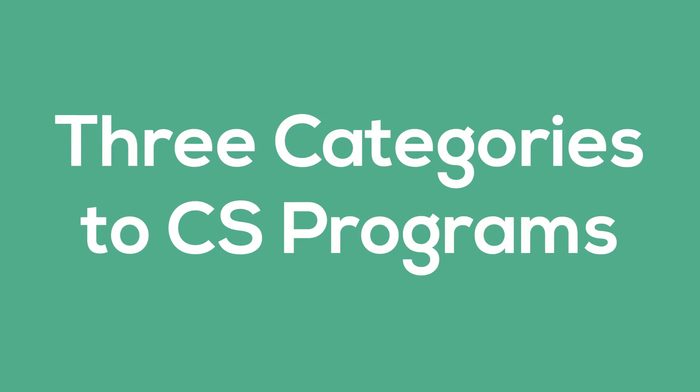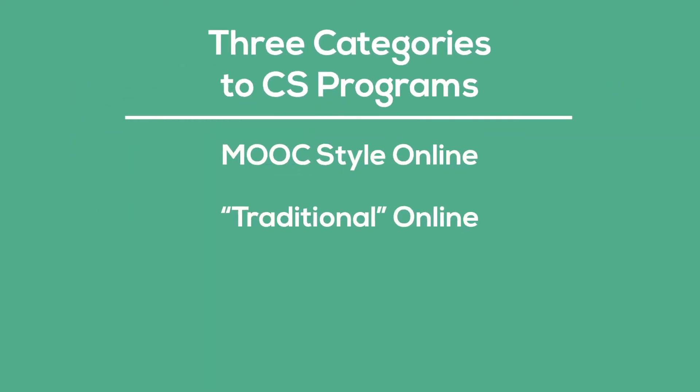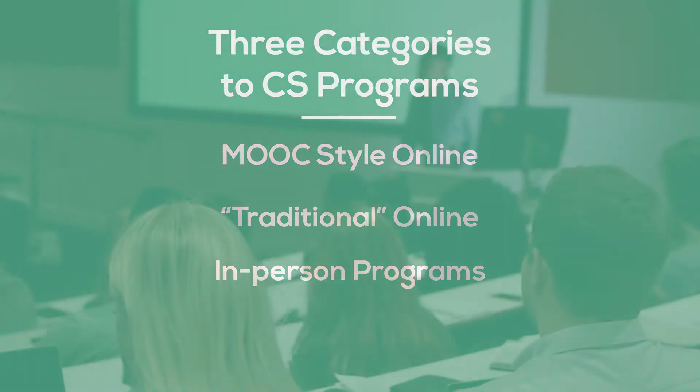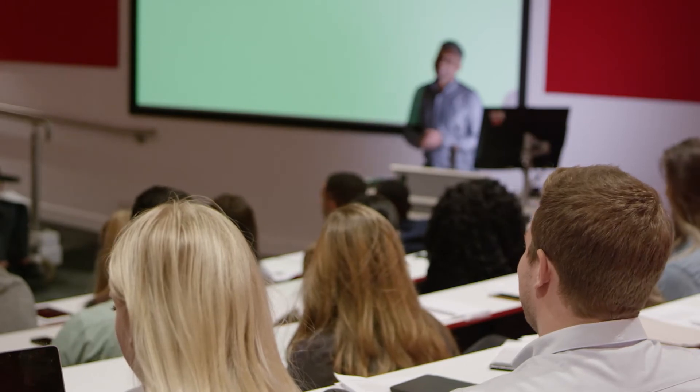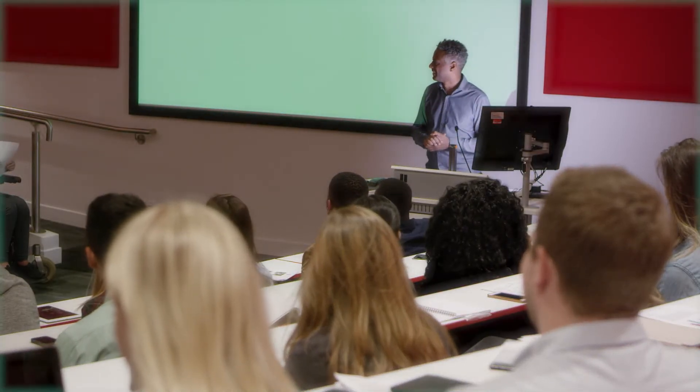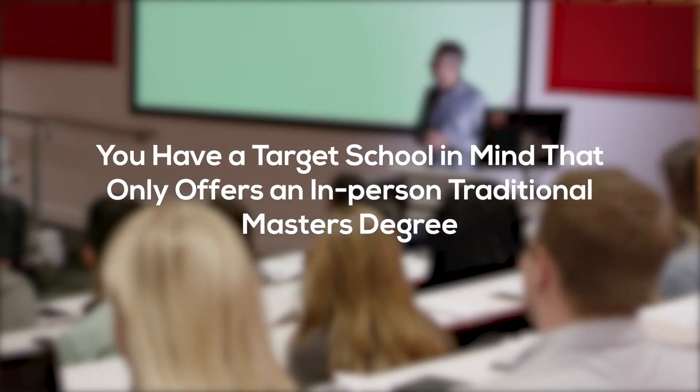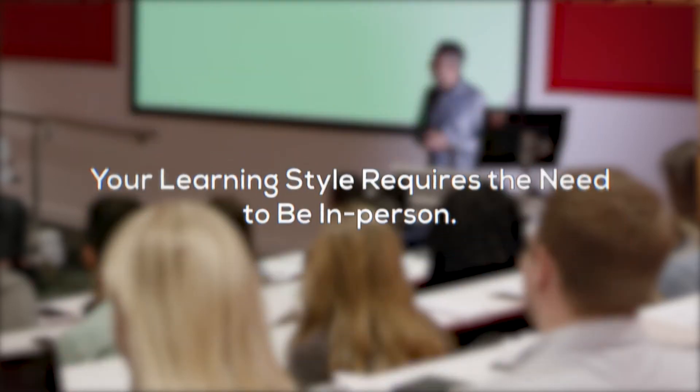First, determine what program style you're looking for. There are three categories CS programs fall into: MOOC-style online programs, traditional online programs, and in-person programs. In-person programs will behave and feel like the courses you took in your undergrad. The only reason you'd choose in-person these days is either you have a target school that only offers in-person, or your learning style requires being in the classroom. All other options are going to be cheaper and for the most part have equal prestige. That leaves you with two options: MOOC online style or traditional online. The biggest difference is the technology platform — MOOC-style programs are offered on services like Udacity or Coursera, while traditional online programs are self-contained with the university's web pages.